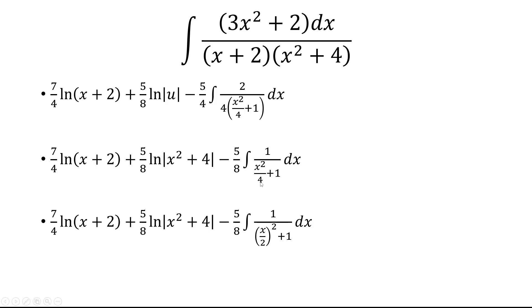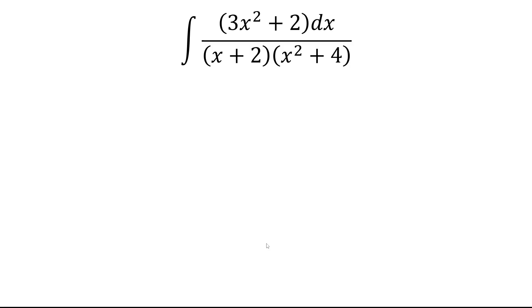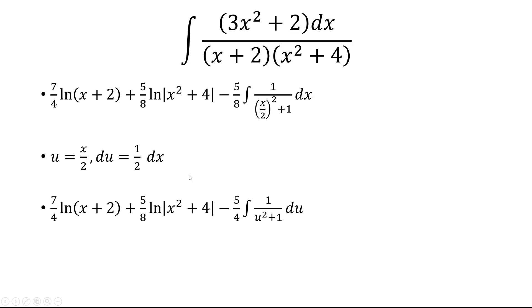And so x squared over 4, you can rewrite it as x over 2 quantity squared. And we can make a substitution, let u equal x over 2. du is 1 half dx. So that's just 1 over u squared plus 1, du.